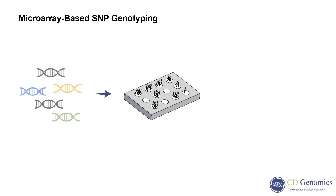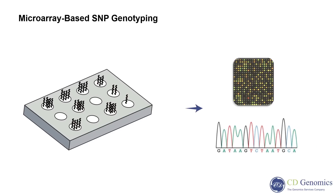High-throughput DNA microarrays can analyze hundreds of thousands of SNPs simultaneously, with probes designed for known sequences, enabling the screening of rare variants at the genome-wide level. The advantage of microarrays is that they can be precisely designed for different purposes, such as susceptibility gene mutations, disease-associated mutations, complex trait studies, and the construction of SNP-based DNA fingerprints.